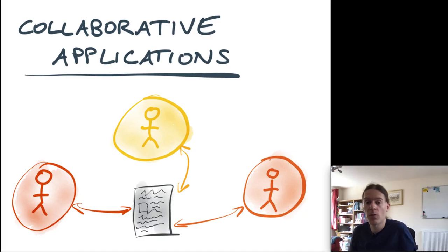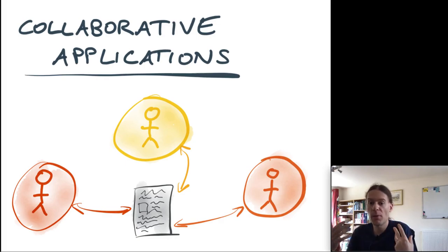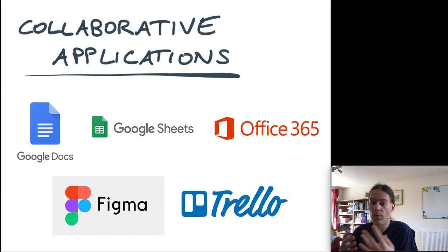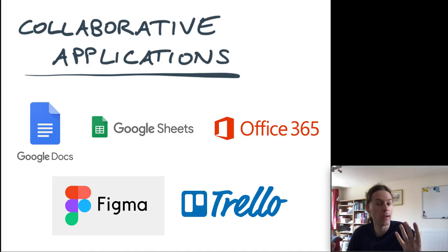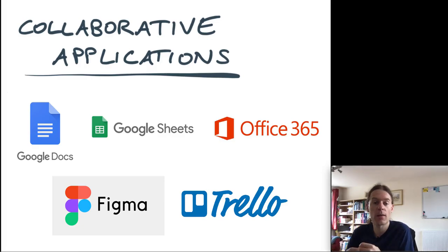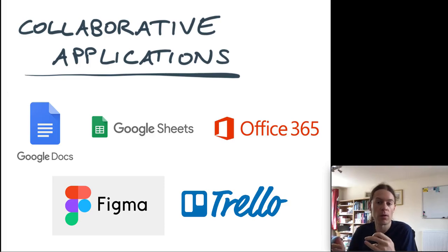In collaboration software, I'm taking a fairly broad view of this. This is any kind of software where several users can come in and update a document, a database, or some kind of shared state. Google Docs is an obvious example where you can have several people editing a document at the same time, be it a text document or a spreadsheet — similar things you get with Office 365. Figma is an example of graphics software that supports multi-user real-time collaboration. Trello is an example of project management software where several users can update the status of various tasks, assign tasks, add comments, and so on.